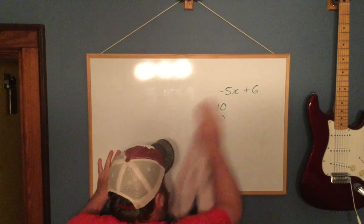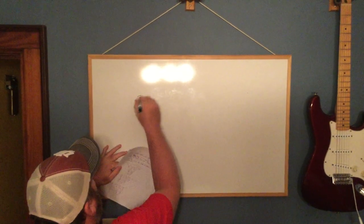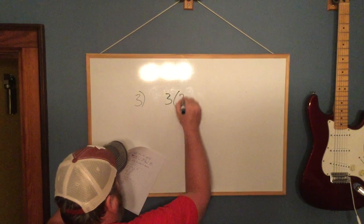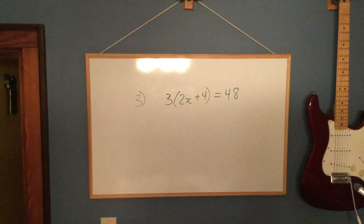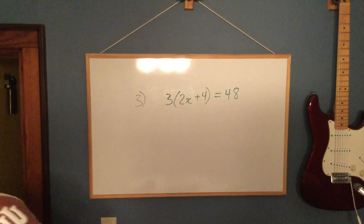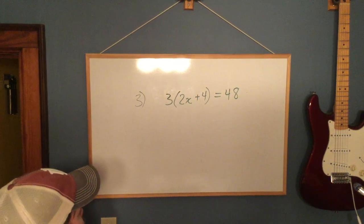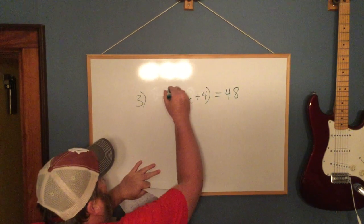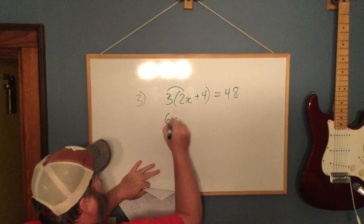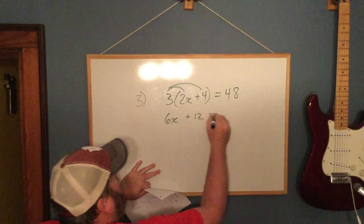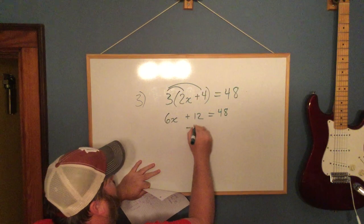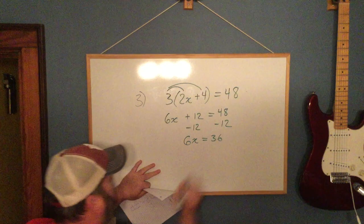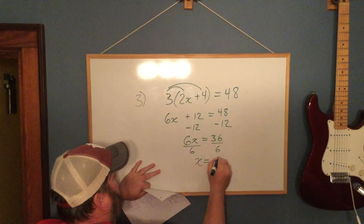Number 3: We have 3 times the quantity of 2x plus 4 equals 48. So now we have some parentheses where we're going to use our distributive property. If you remember way back in August, we watched the dirty hippie making the crying over the double rainbow. This is when we brought this up. We have 3 times 2x which is 6x, 3 times 4 which is 12, and that equals 48. So I just multiply across those parentheses. Get rid of my constant. Now I have 6x equals 36. Divide by 6, and x is 6.